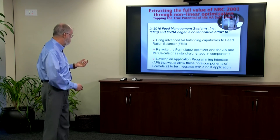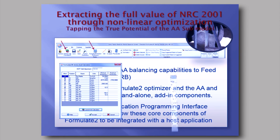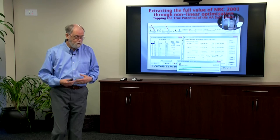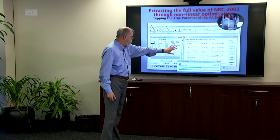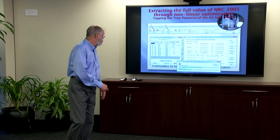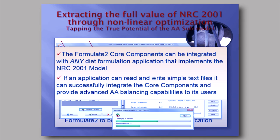If you're familiar with FRB, these are some of the visual elements of the core components running within it. Wayne Gruenhagen will also give us background on the experience he and the folks at Big Gain have had using this approach with FRB and the core components integrated. This is the amino acid calculator, and this is the visual element of the optimization process. The Formulate 2 core components can be integrated with any diet formulation application implementing NRC 2001 — it's so simple that if the application can read and write text files, it can integrate the core components.